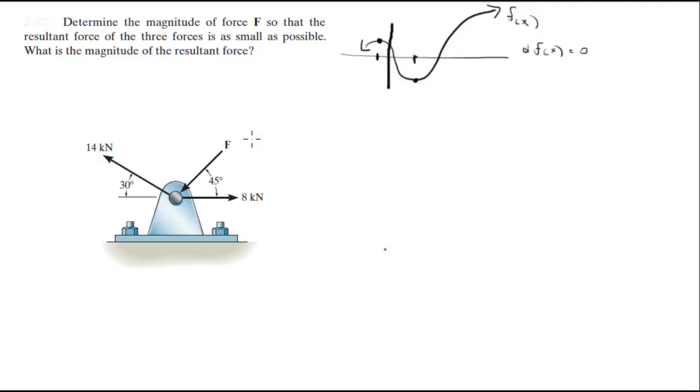Now if you think about it, the function of the resultant force over the force will look something like this, because the force will come at a minimum and then as it keeps increasing or decreasing it will keep going to infinity. So we're trying to find is this minimum right here.